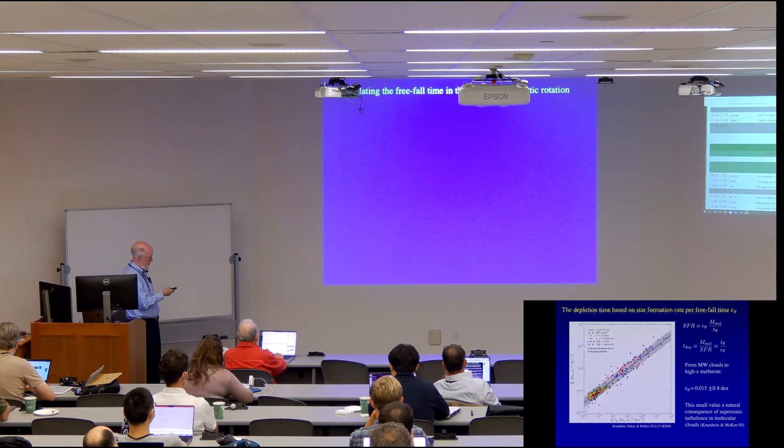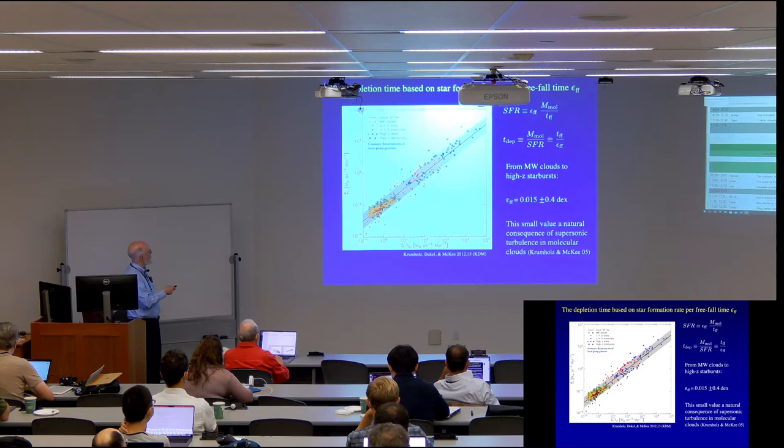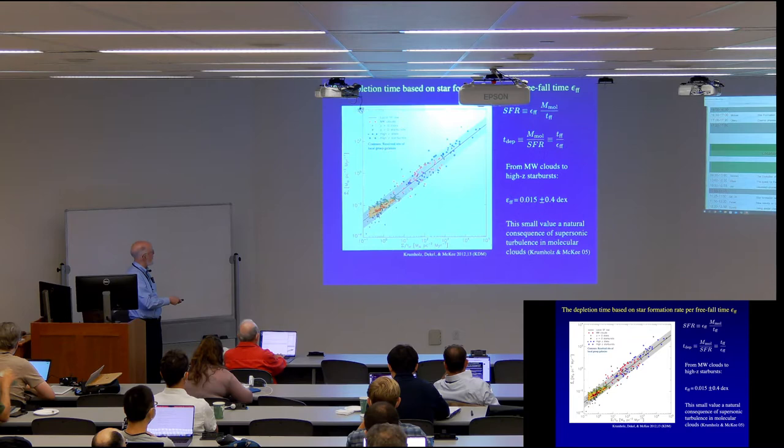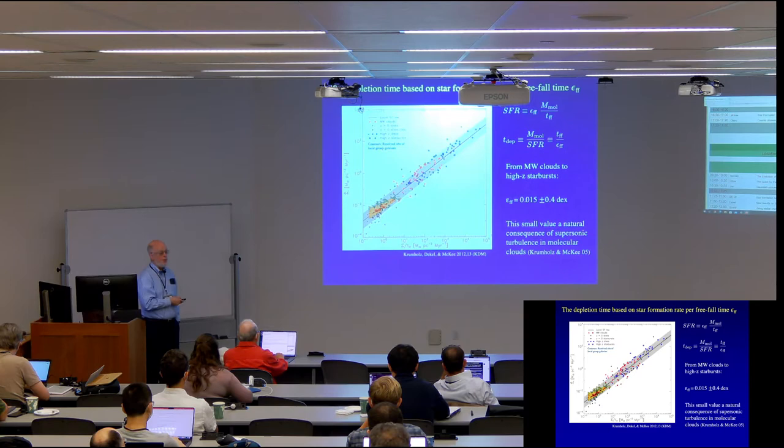And what we found in a paper that Mark led and that Abishai and I participated in, was that if you go all the way from Milky Way clouds, which are down here, these are the contours or resolved observations of local group galaxies. And then we also have Milky Way clouds, these are the red symbols. We have disks and starbursts in the local universe. These are the black symbols and the blue symbols up here are the high Z disks and starbursts. And you can see that basically over many decades in this quantity of this surface density divided by the freefall time, that's six decades, the star formation rate goes linearly with that. And the coefficient is very small. So this has been known for a long time that star formation is very inefficient and this just emphasizes it. But it puts it in a very clean way.